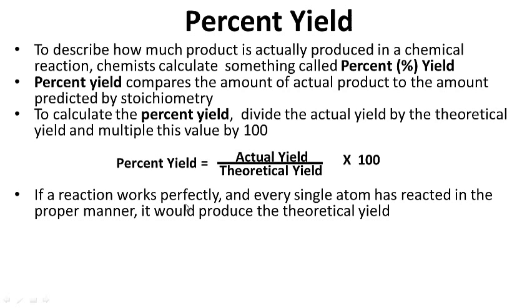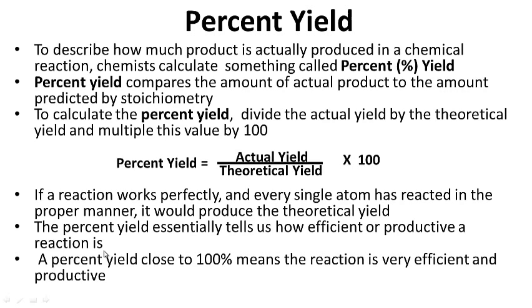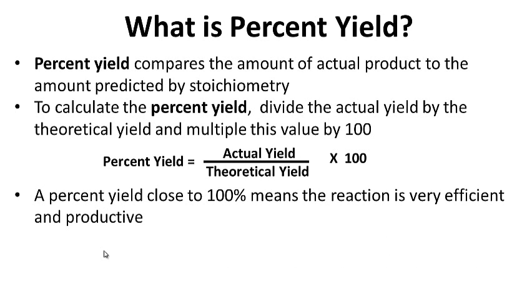If a reaction works perfectly and every single atom has reacted in the proper manner, it would produce the theoretical yield. The percent yield essentially tells us how efficient or productive a reaction is. A percent yield close to 100% tells us that the reaction is very efficient and very productive. For your notes: what is percent yield?